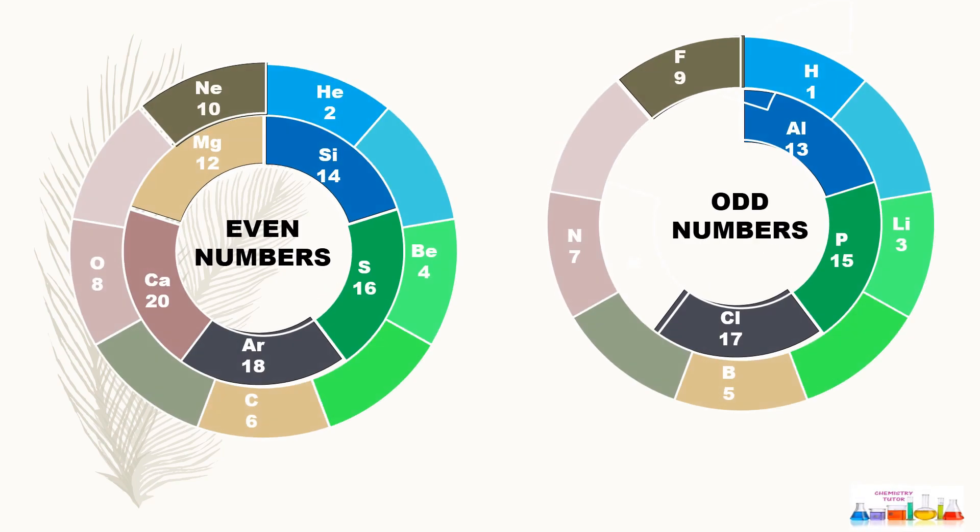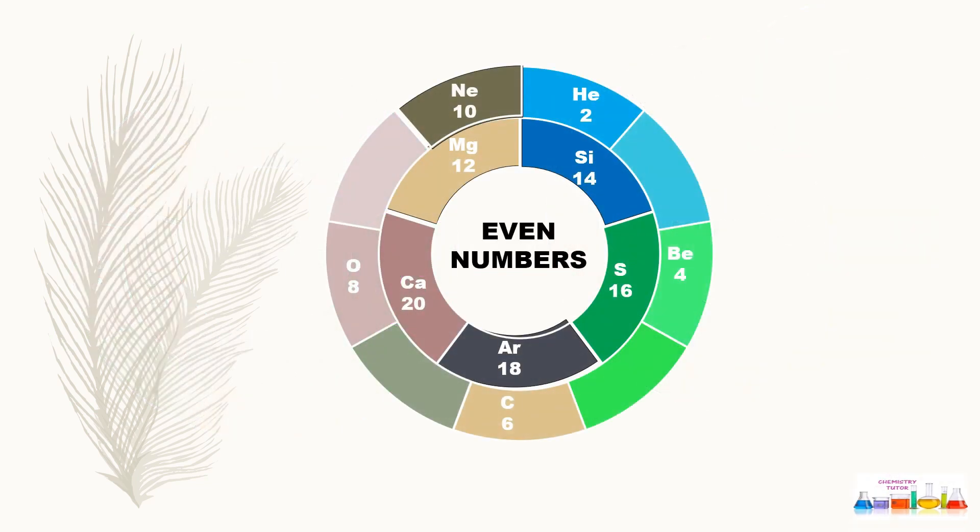First, I am taking even numbers which will start from helium to calcium: carbon 6, oxygen 8, neon 10, magnesium 12, silicon 14, sulfur 16, argon 18, and calcium 20.